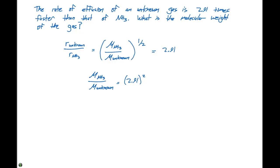So if we wanted to determine the molar mass of our unknown, we can rearrange this. Our molar mass of our unknown equals our molar mass of NH3 divided by 2.91, that quantity squared.